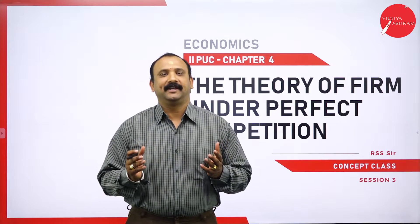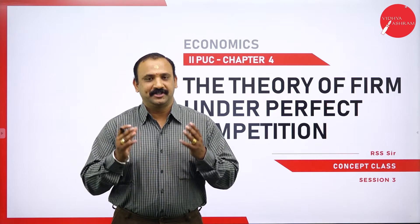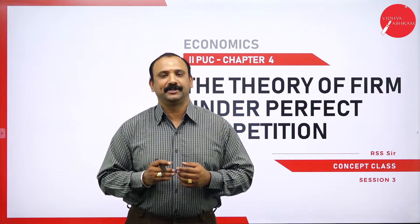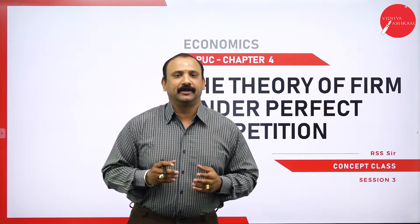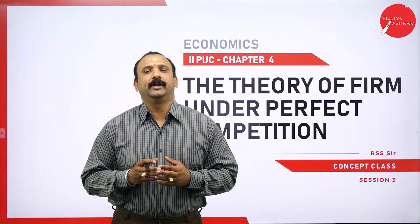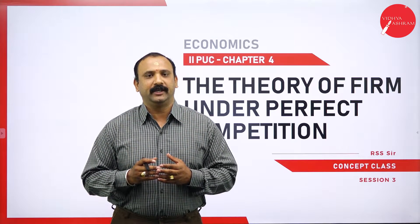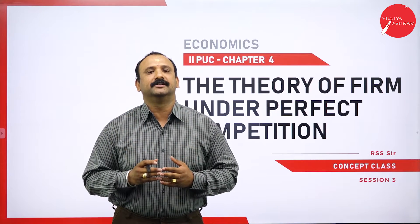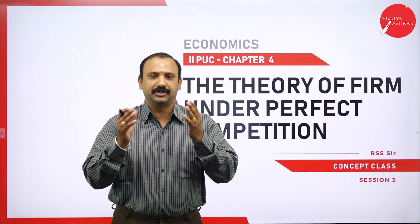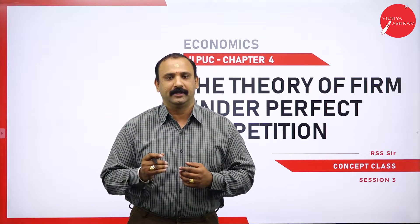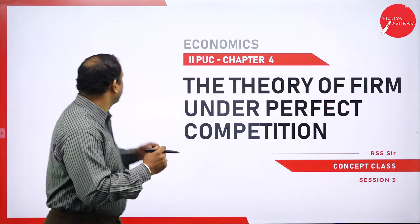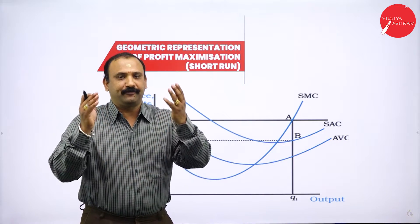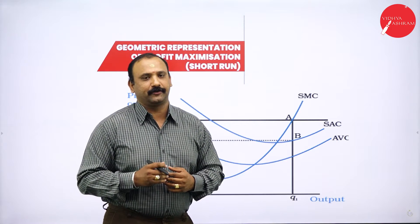Good morning and welcome to the third session on Chapter 4, the theory of the firm under perfect competition. In this session, we are going to look into the graphs of profit maximization and various other factors in terms of the short run and long run — specifically, the geometric representation of profit maximization in the short run.